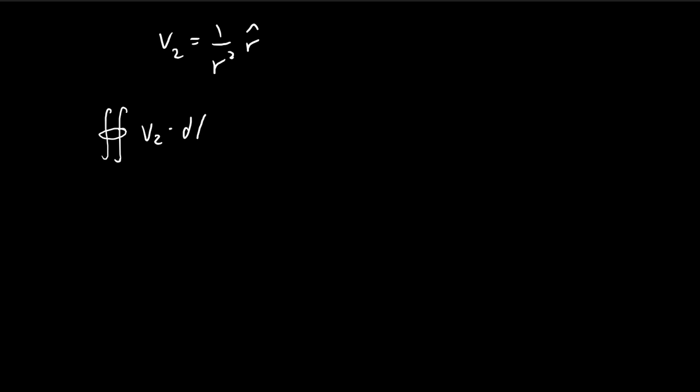So v₂ dot dA. As we discussed in the last video, in spherical coordinates, dA is equal to r squared sine theta d theta d phi. In this case, we're on a spherical shell, on the surface of a spherical shell with radius r.